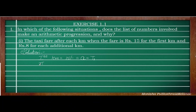In the second kilometer, there will be an addition of Rs.8. So it is 15 + 8 = 23. This is in the form A + D, where A is the initial term (15) and D is 8. In alternate form, T1 + D = 15 + 8 = 23.